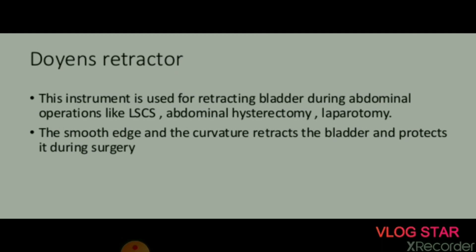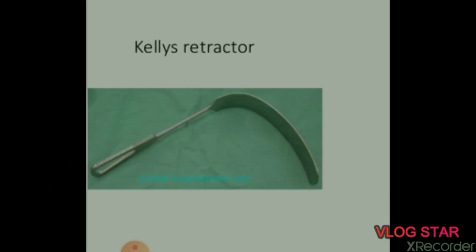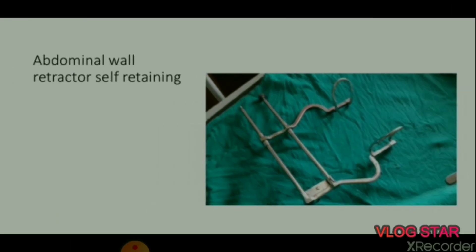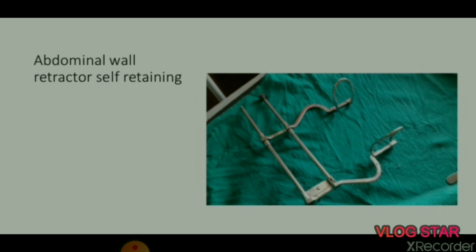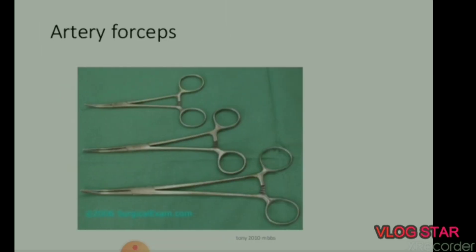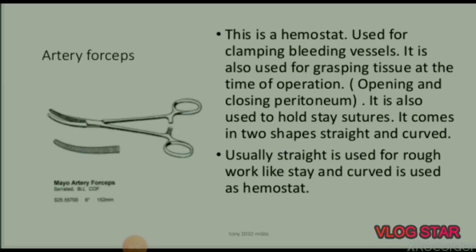Next is Doyen's retractor, known to depress the bladder in cesarean section. This instrument is used for retracting the bladder during abdominal operations like LSCS, abdominal hysterectomy, and laparotomy. The smooth edge and curvature retracts the bladder and protects it during surgery. Next is Kelly's retractor, an abdominal wall self-retaining retractor.